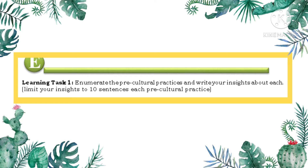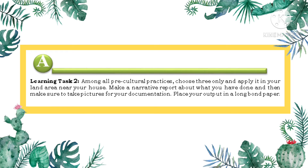You are now ready to answer Learning Task 1 on page 21 of your self-learning module. Enumerate the pre-cultural practices and write your insights about each, limiting your insights to 10 sentences per pre-cultural practice. For the assimilation on page 21, Learning Task 2: among all pre-cultural practices, choose only 3 and apply them in your land area near your house. Make a narrative report about what you have done and take pictures for documentation. Place your output on a long bond paper.